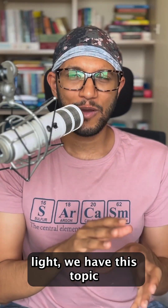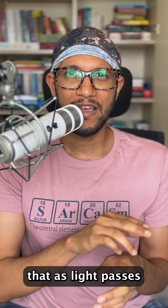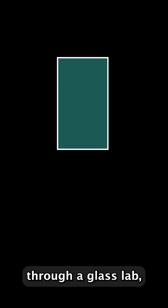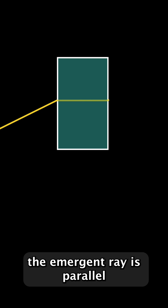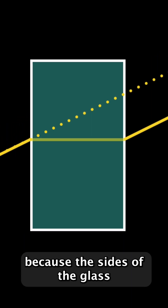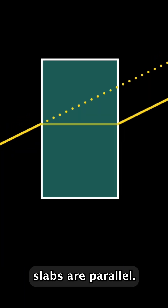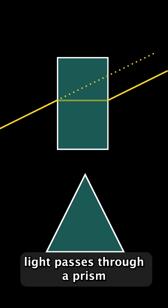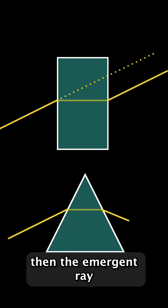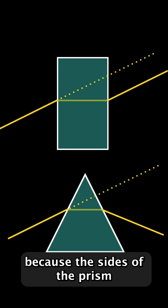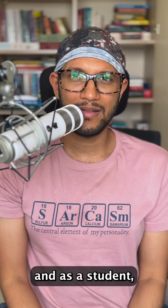In chapter light, we have this topic where we say that as light passes through a glass slab, the emergent ray is parallel to the incident ray. This happens because the sides of the glass slab are parallel. But if the light passes through a prism, then the emergent ray is not parallel to the incident ray because the sides of the prism are not parallel.